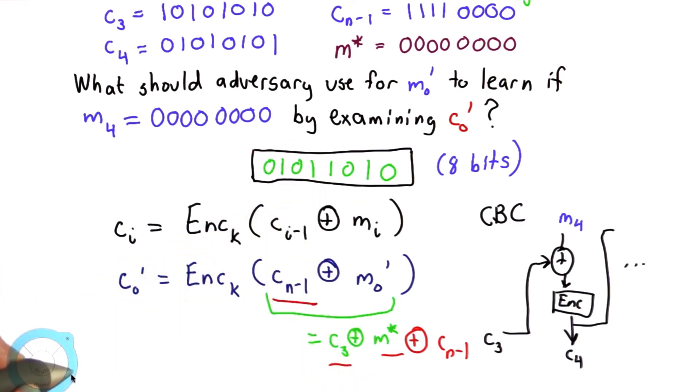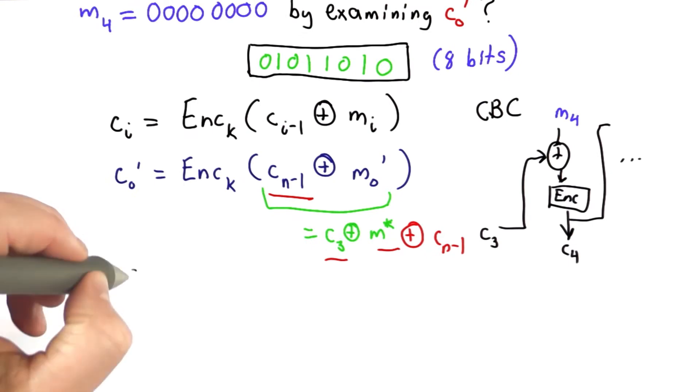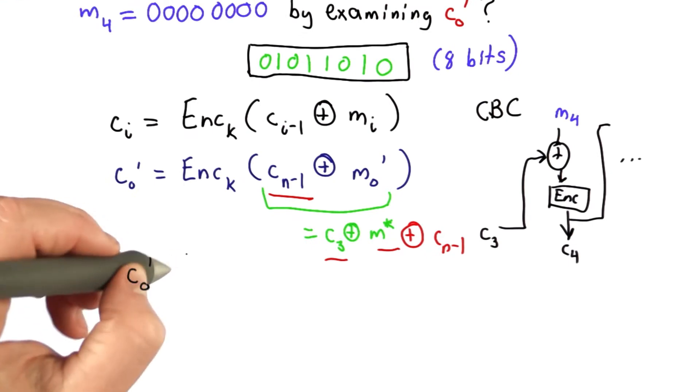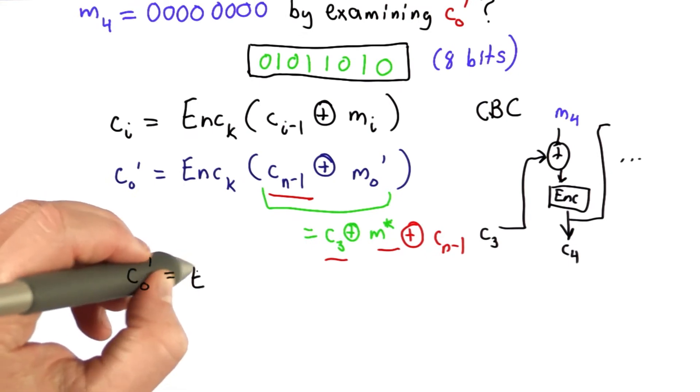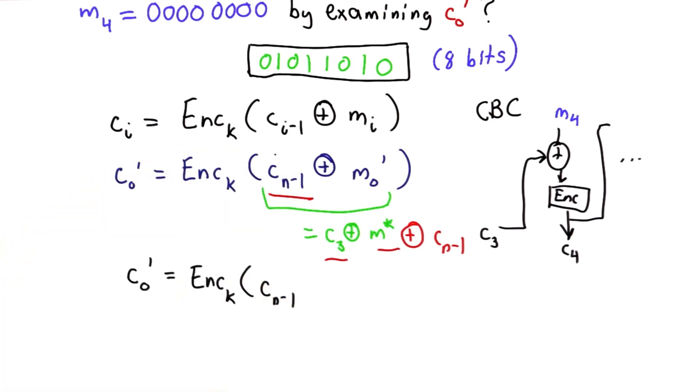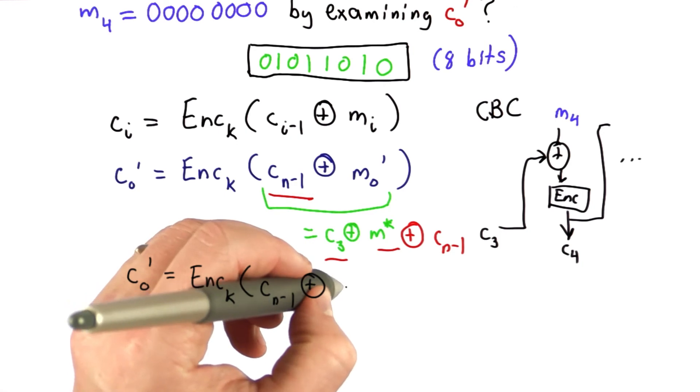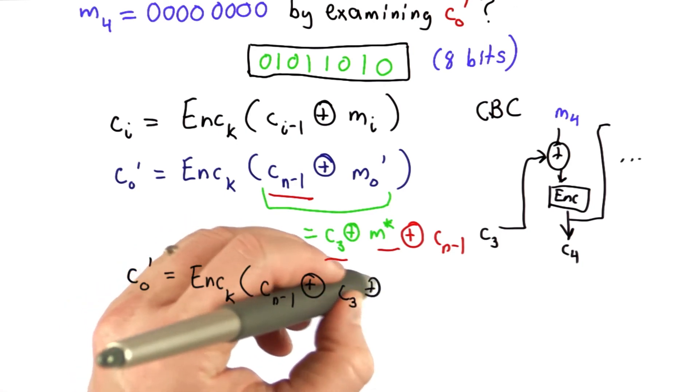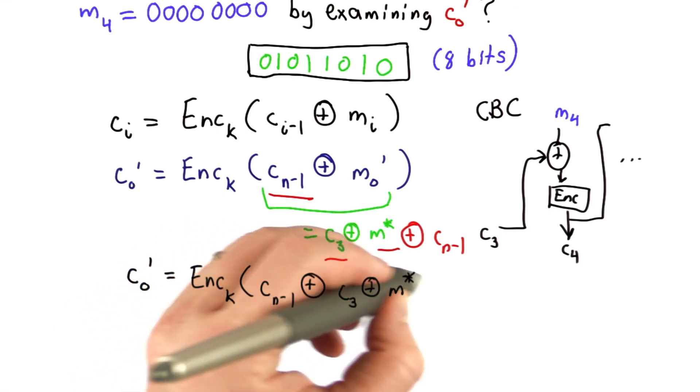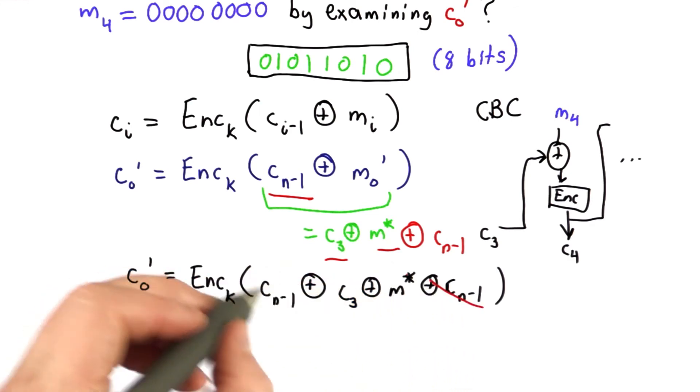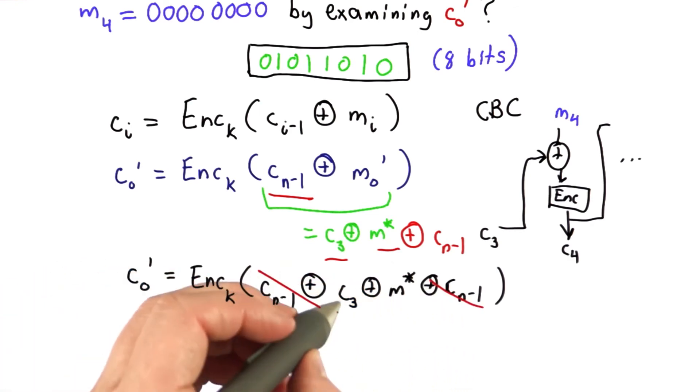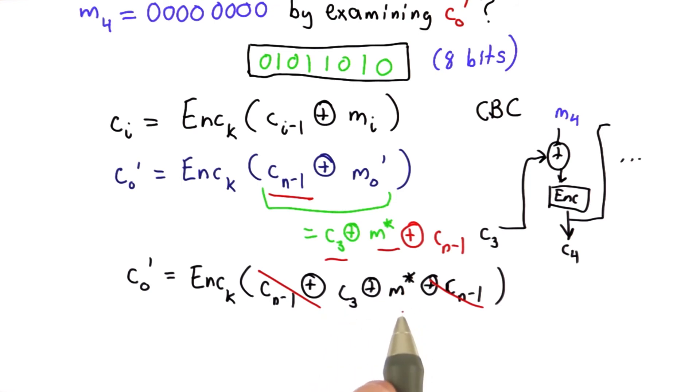And let's see what happens when that value is used for m0. What we're going to get for ciphertext block 0 is the result of encrypting the known value of ciphertext block n minus 1 with this result, which is C3. Now this is xor, so that same values cancel out, and so that means the result is the result of encrypting C3, xord with m star.